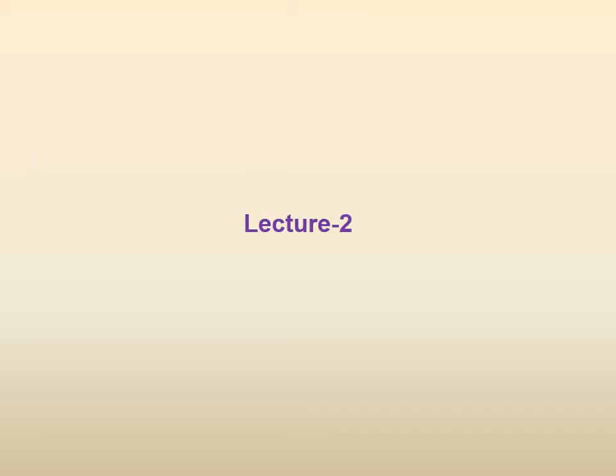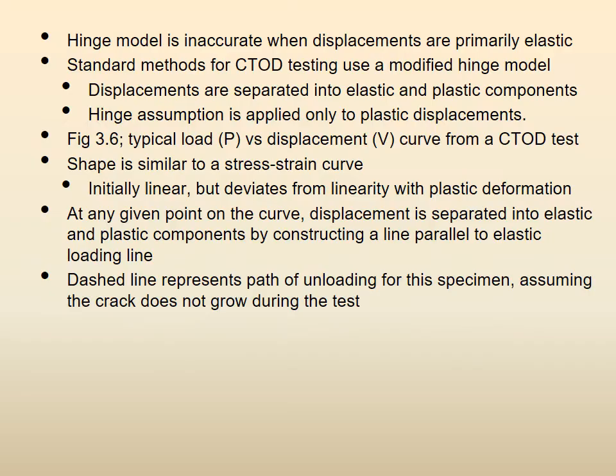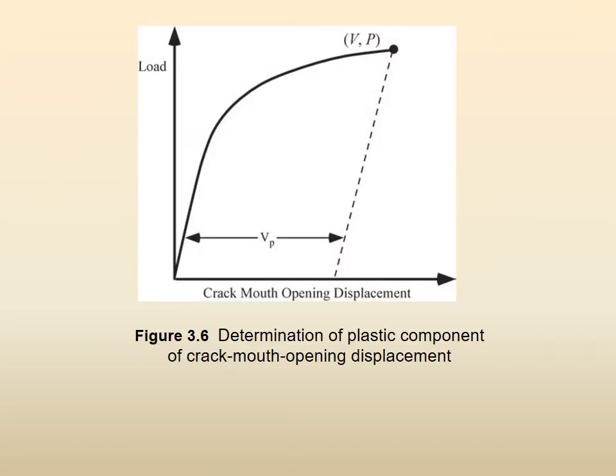So let's see what we did last time. We started revising the hinge model for experimental evaluation of CTOD, describing it in terms of load and displacement V. We explained the determination of the plastic component of crack mouth opening displacement, where the plastic portion VP is found by drawing a line parallel to the initial straight line.